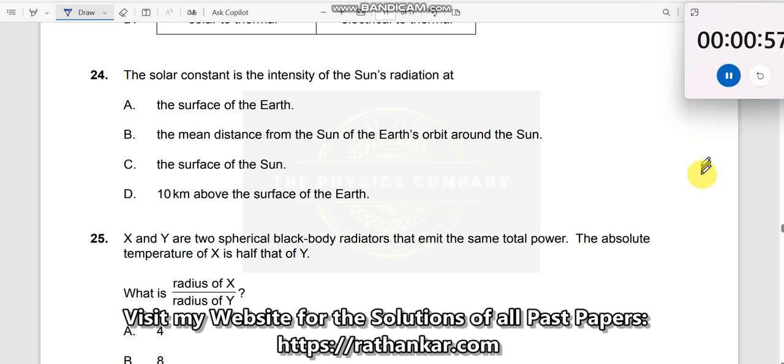Question number 24. The solar constant is the intensity of sun's radiation at the... So what is it now? See,